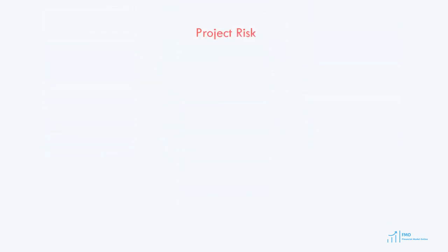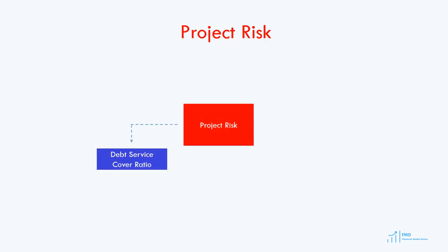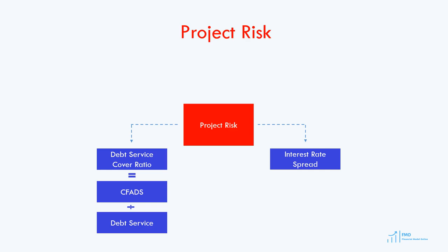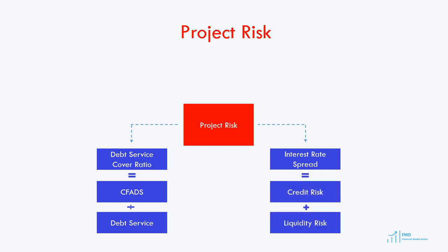Project risk manifests itself in two important items related to debt financing. The first is the DSCR, and the second is the interest rate spread. DSCR measures the downside risk of the project, so riskier projects will have higher DSCR, resulting in lower debt size. Typically, project finance debt will carry a floating interest rate, which consists of the base rate and interest rate margin. The base rate is the cost of borrowing for the banks, and the margin or spread reflects the riskiness of the project. The interest rate spread typically consists of credit risk and liquidity risk, so riskier projects result in higher interest rates, which again reduce the debt size.